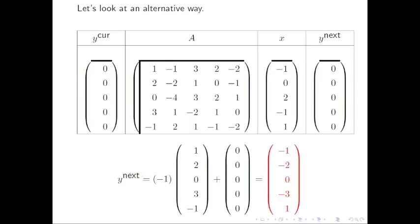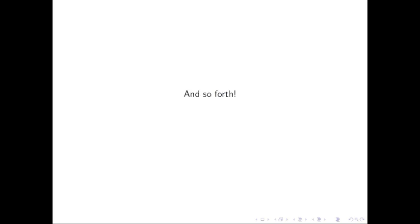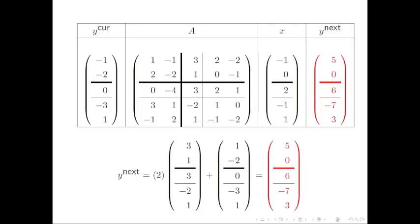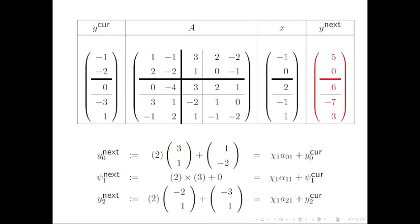What if we again march through A in a way that exposes the diagonal elements? Looking in more detail at the second step: the third column of A is partitioned into three parts, as is the vector y. An axpy operation with partitioned vectors means we just perform axpys with the separate parts. Thus, what was initially a single axpy operation to update y now becomes three updates: an axpy with the part of the column above the diagonal, a multiply with the diagonal element, and an axpy with the part of the column below the diagonal.